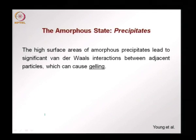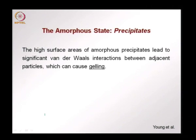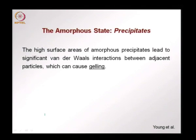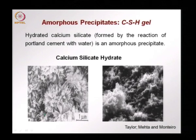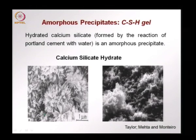Because of their defected nature, these precipitates have high surface areas. Because of this, there is a lot of van der Waals interaction between adjacent particles, giving rise to gelling. A gel is a material which has liquid between solid particles. One important gel in civil engineering materials is the calcium silicate hydrate, which is formed as an amorphous precipitate due to the reaction of Portland cement and water.